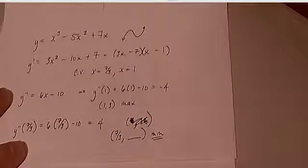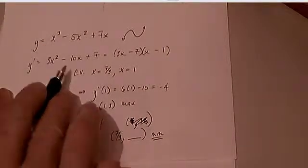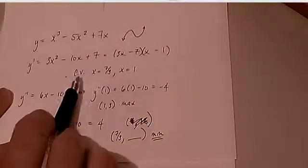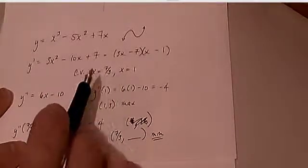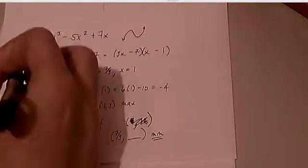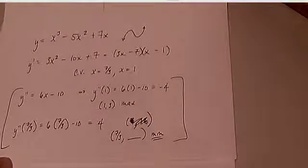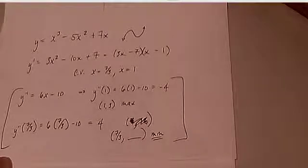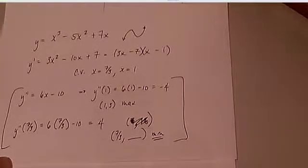So there are two ways, once you get critical values from the first derivative, to identify whether those critical values are maximum, minimum, or neither. One is by a first derivative sign chart and then interpreting it by the first derivative test. The other way is using the second derivative to determine the concavity of the interval in which the critical value occurs, and that concavity tells you whether it's a maximum, minimum, or neither.